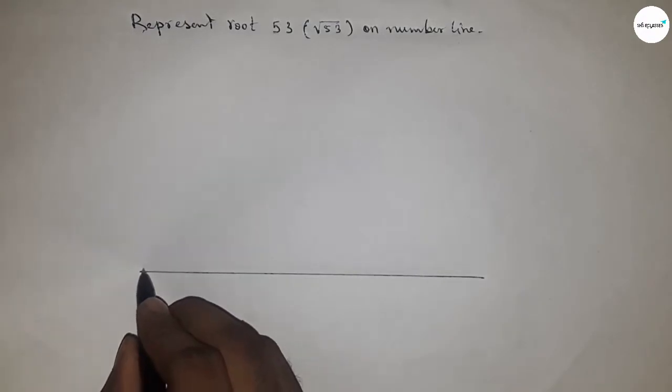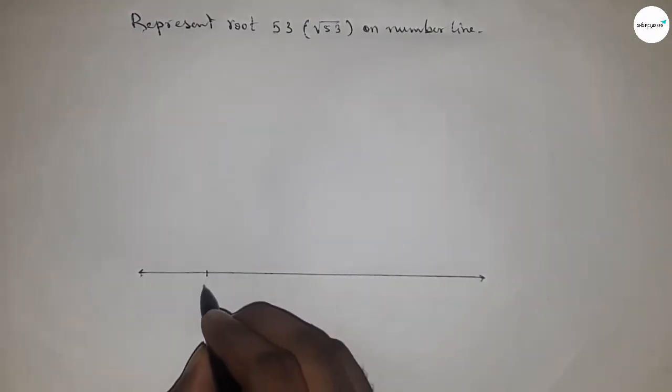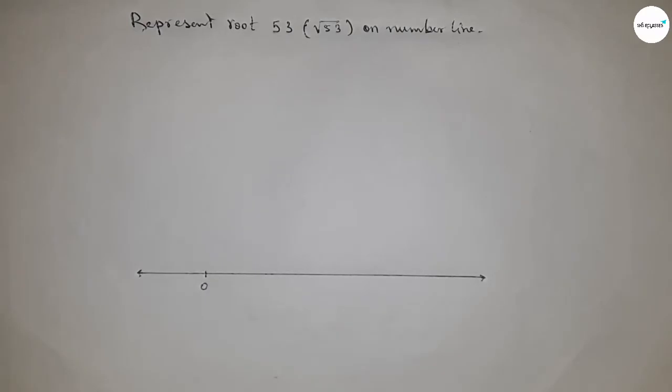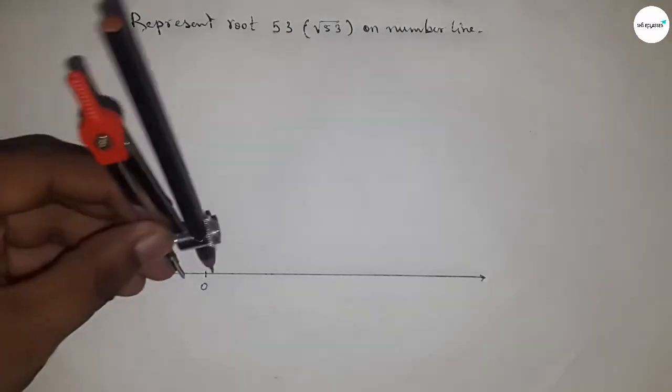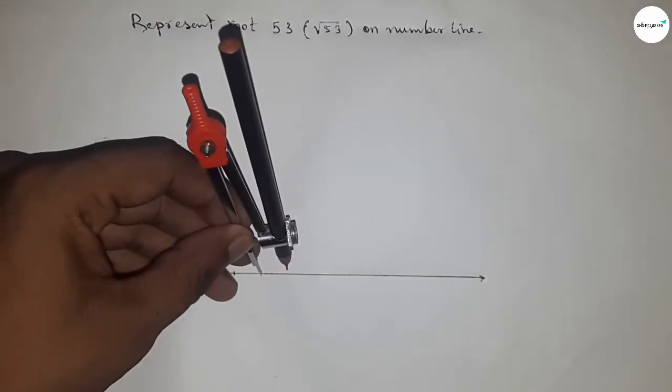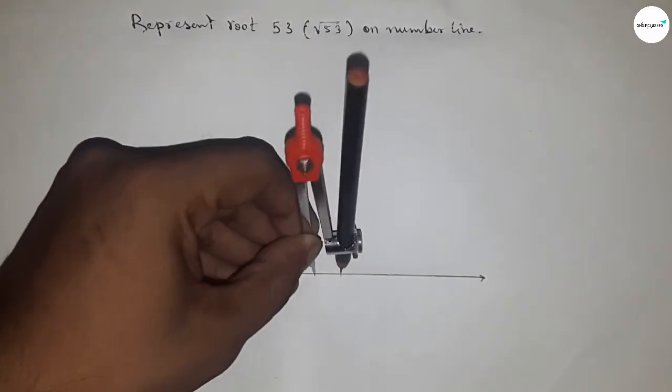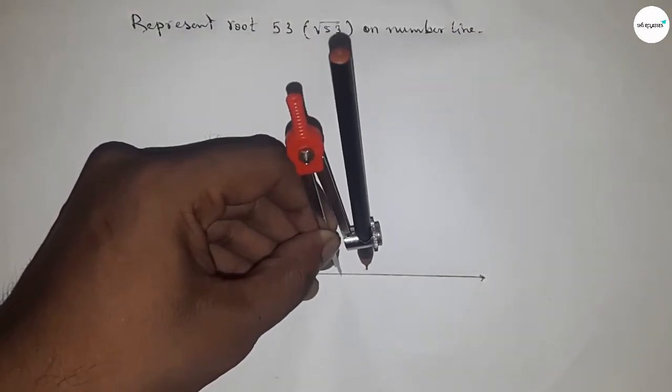Of any length and mark the ends with arrows. And taking here the starting number zero. Next, taking any length by compass and mark the numbers on the line by this way. And this length is called one unit length.